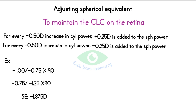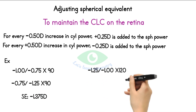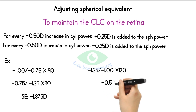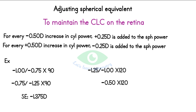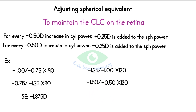Another example: After power refinement, the new cylindrical power found was minus 0.5 at 120 degrees — a reduction of minus 0.5 diopter. So we add minus 0.25 to the existing spherical power: minus 1.25 becomes minus 1.50 diopters. The spherical equivalent in both cases remains the same.